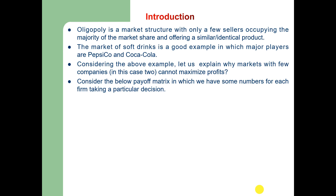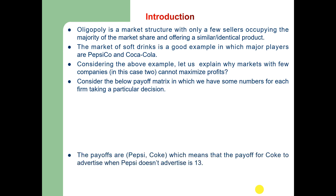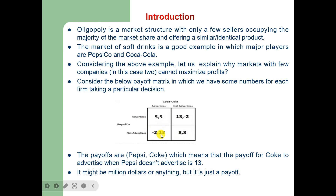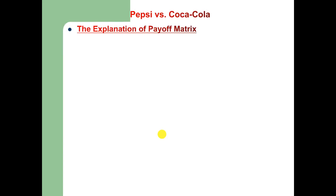Consider the payoff matrix of the two firms, in which we have some numbers for each firm taking a particular decision. Here is the payoff matrix: Coca-Cola is on one axis and PepsiCo is on the other. Each entry in this matrix shows the payoffs for Pepsi and Coke. For example, the payoff for Coke when it advertises and Pepsi does not advertise is 13 — that may be in million dollars. I will now explain this payoff matrix in detail.